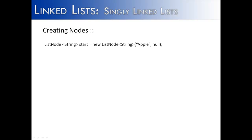Now we know what list nodes are and how the class is created for that list node, we're going to look at how they interact with one another in this video. I've written the code to create a node and called it 'start'. Start creates a node using the constructor from the last video, giving it a memory reference and a value — that value is 'apple', and the next value is null because there is no other node in the list.